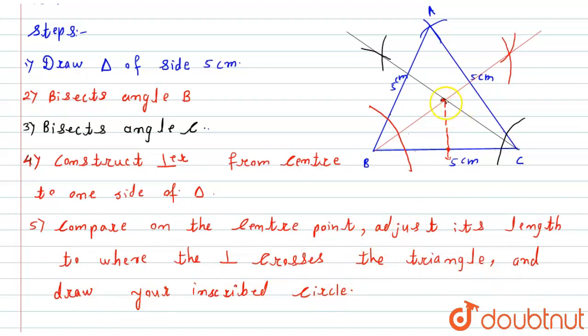So for that, by taking a length into the compass from this center to the point where this perpendicular crosses, after adjusting it into the compass, I will draw here the circle. So this will be my required inscribed circle as per the given question.